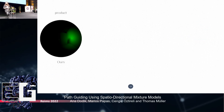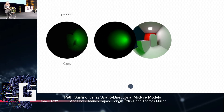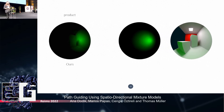Two common strategies are to shoot rays proportional to the material response, or a weighted average of the material response and the light source as a proxy for the product. Alternatively, other popular methods rely on machine learning to learn the incoming radiance, possibly averaging it with the material response. Our method falls into the third category, where we attempt to learn and sample the product of the two directly. Similar to prior work, our method allows us to learn the incoming radiance and the material model separately, and then multiply the learned distributions together during rendering.